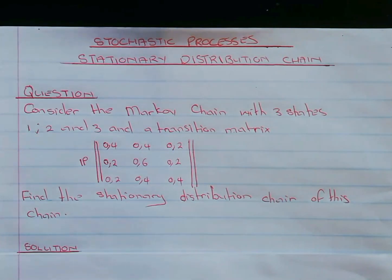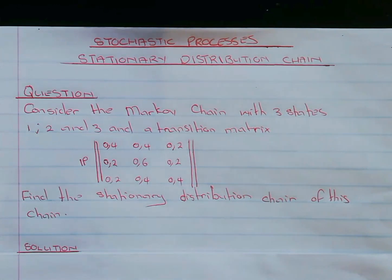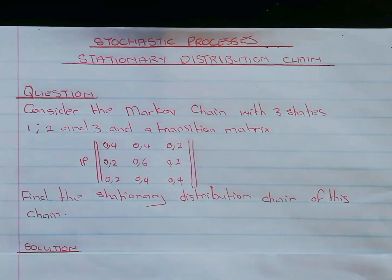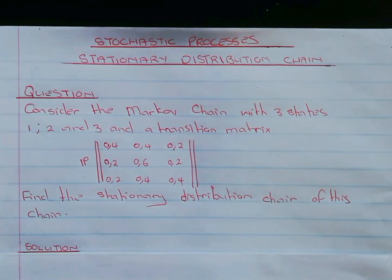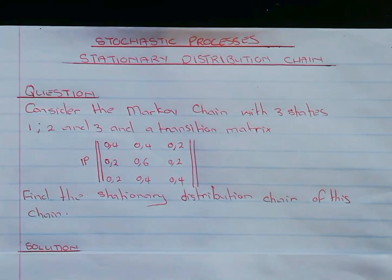Today we want to look at the stationary distribution of a Markov chain. We want to look at how do we find the stationary distribution given the PTM — that is, the probability transition matrix. Consider the Markov chain with three states: one, two, and three, and a transition matrix given below. You are required to find the stationary distribution of this chain.